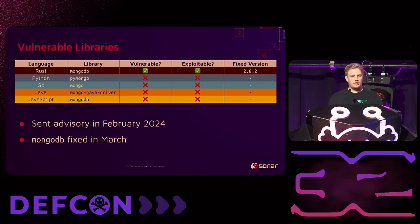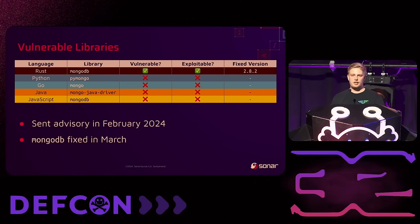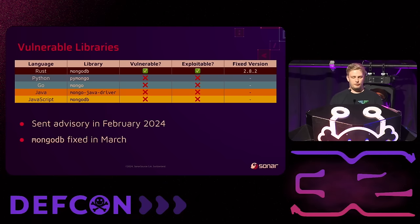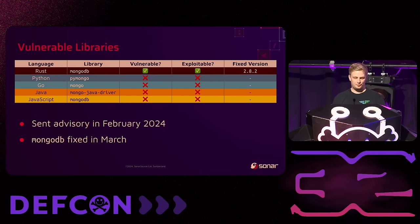For MongoDB libraries, we found the official Rust MongoDB client library to be vulnerable and exploitable. We sent our advisory in February and they fixed it in March. If you use this library in production, update to version 2.8.2.